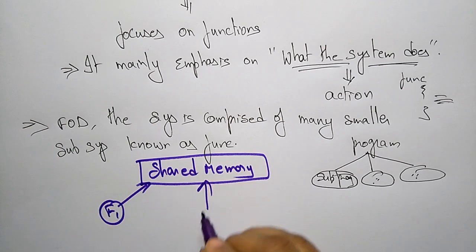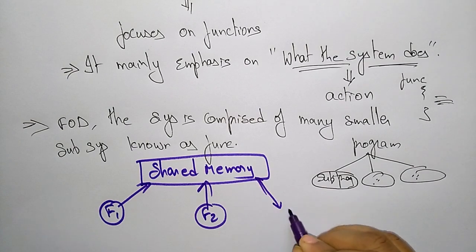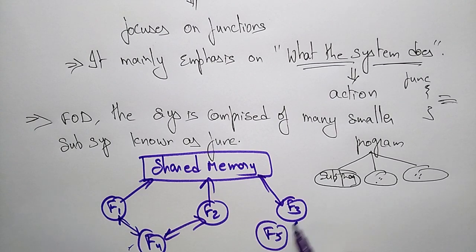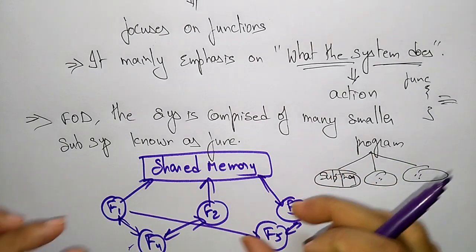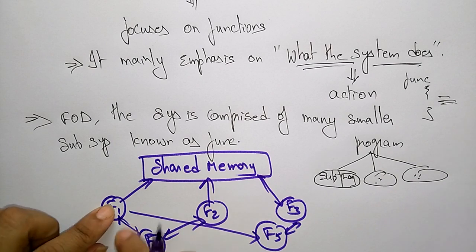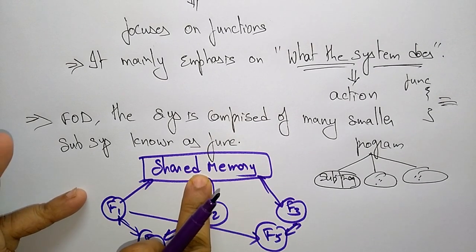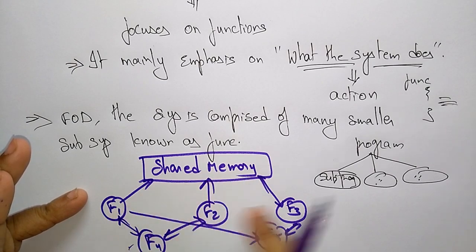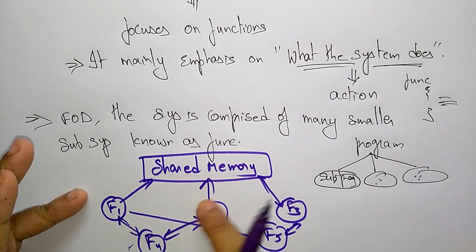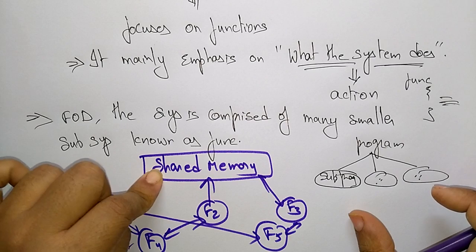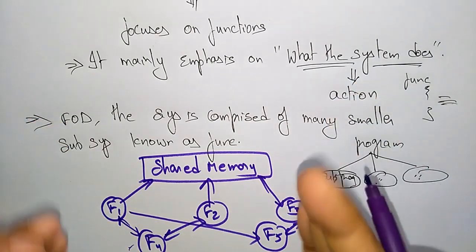So we have functions F1, F2, F3, F4, F5 — these are all the sub functions. A function is again divided into sub functions, and so on. All these functions are sharing some data — sharing information among themselves. These two are sharing information among themselves, and these are sharing information among themselves by means of information passing and using information available globally. This is function oriented design.